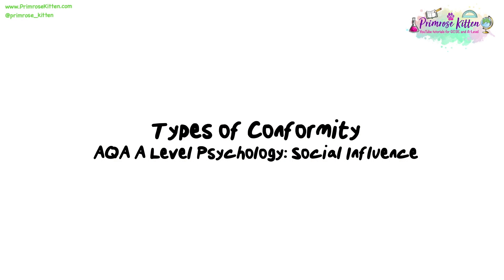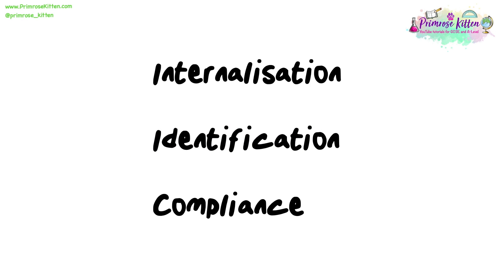Types of conformity. The three types of conformity that you need to know are internalisation, identification and compliance. We'll now look at each of these in turn, looking at their definitions and providing examples.